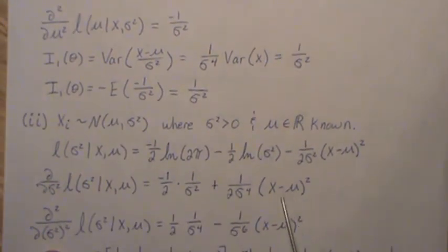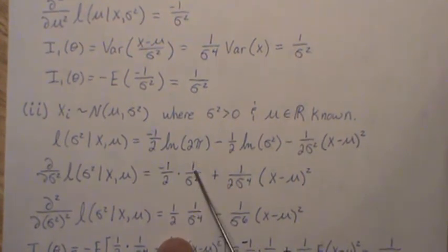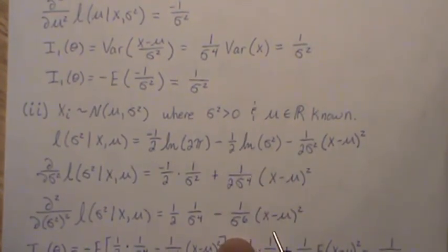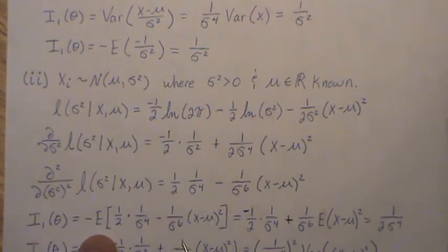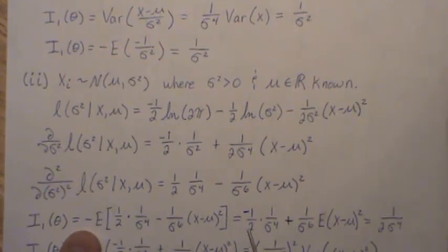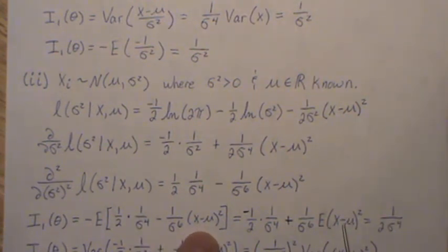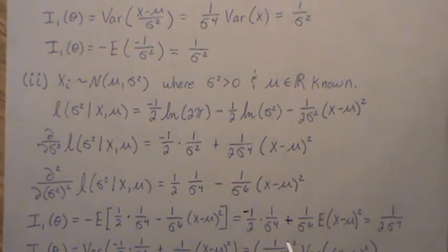Now the Fisher information with respect to a sample size of one is the negative expected value of the second derivative. We put the second derivative expression in. The constant term has no x's, so we just get its negative. The minus signs combine to give a plus. Then we just get the expected value of the remaining term. That is the formula for variance — it's sigma squared — which cancels one of those. Combining gives one over two times sigma to the fourth. So that is the Fisher information.